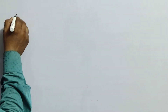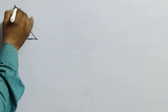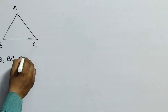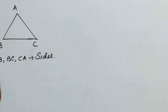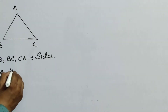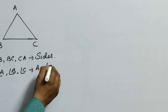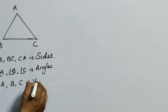In earlier class you have learned about triangles. Just name this triangle as ABC. ABC is a triangle and you all know that AB, BC, CA are sides of a triangle. And angle A, angle B, angle C are called angles. And A, B and C are vertices.